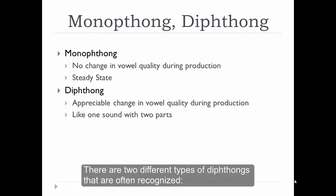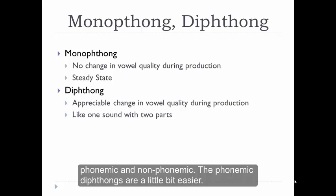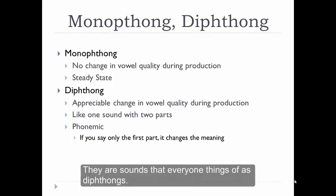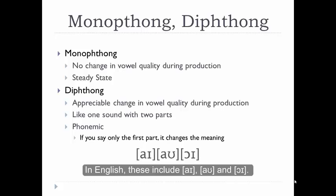Now, there are two different types of diphthongs that are often recognized: phonemic and non-phonemic. The phonemic diphthongs are a little bit easier — they're the sounds that everyone thinks of as diphthongs. In English, these include AI, OW, and OY.